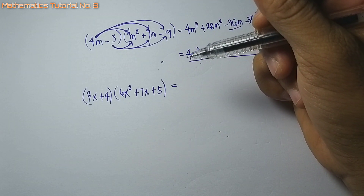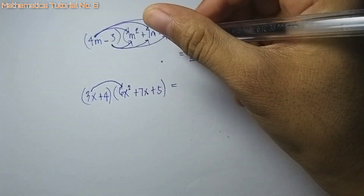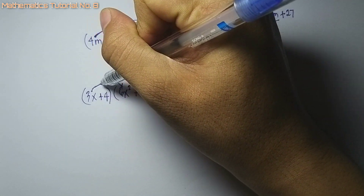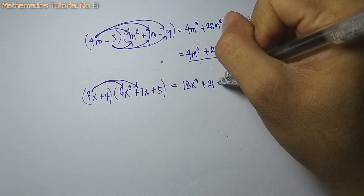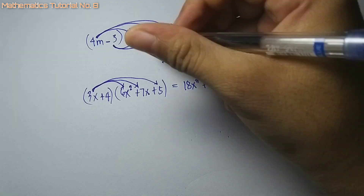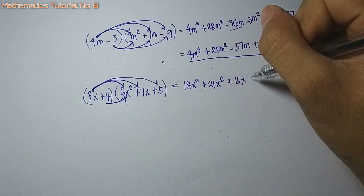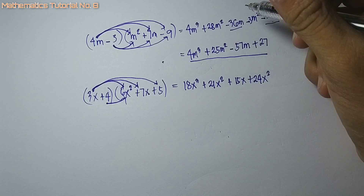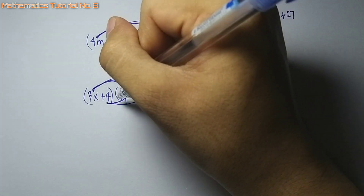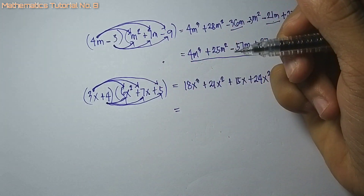Again, i-multiply ang tanang terms dito sa picas na polynomial. 3x times 6x squared, that is 18x cubed. Sunod, 3x times 7x, that is positive 21x squared. Sa last, 3x times 5, that is 15x. Manata dina term na dahil sa ikaduha: 4 times 6x squared, that is 24x squared. Sunod, 4 times 7x, that is 28x. Sa last, 4 times 5, that is 20.